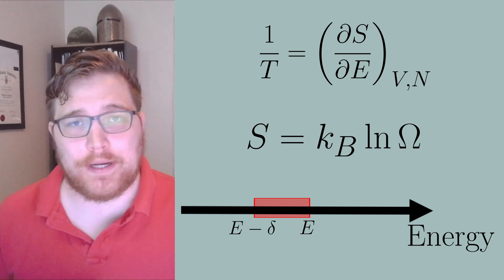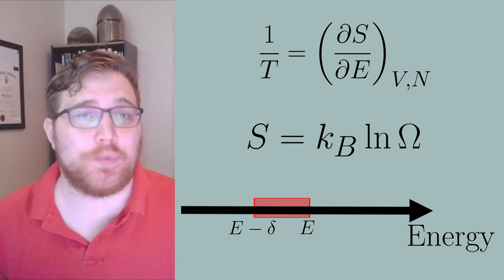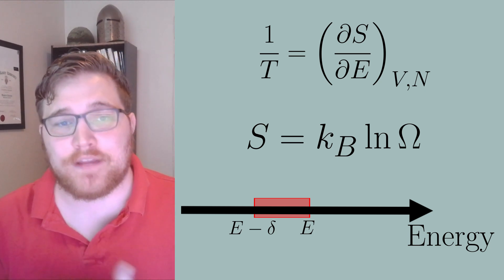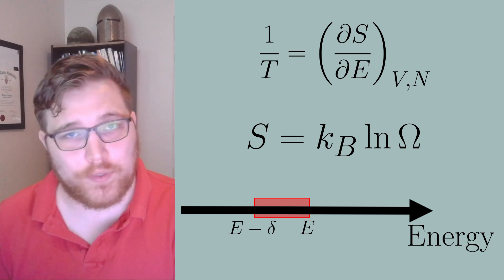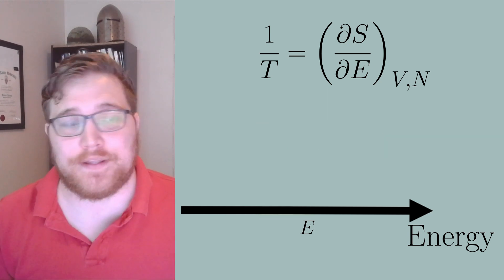So a quick way to summarize how we do our counting is that we only count states that are on an energy surface or a small energy window. Next let's look at the competing idea.